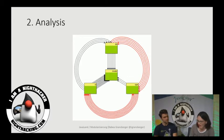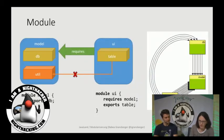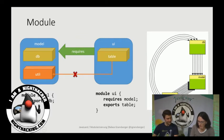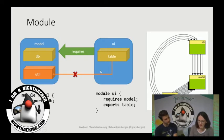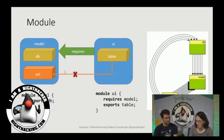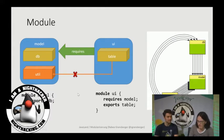We can do some refactoring and split out these parts and make modules of them. If we want to define a module, we create a new project and add a module descriptor to it. We name it, say, 'model', and it exports one of the packages — the database package — but we don't want to export the util package. Then we have our new UI module: it has the name 'ui', it requires our model, and it exports another table package. Classes in there now can't call any classes of the util package anymore, even if they are public — that's an advantage with modules.